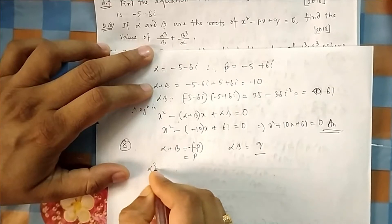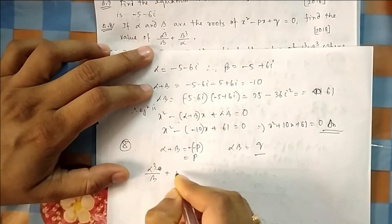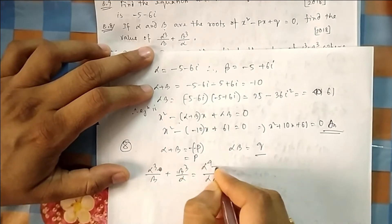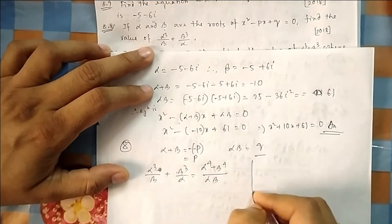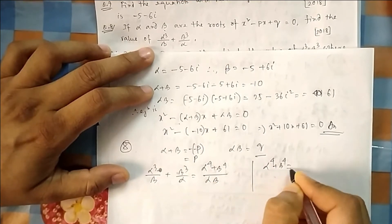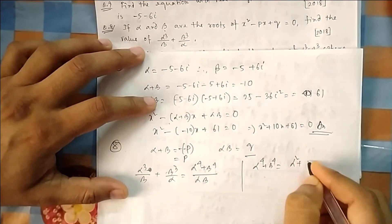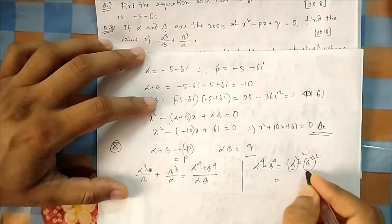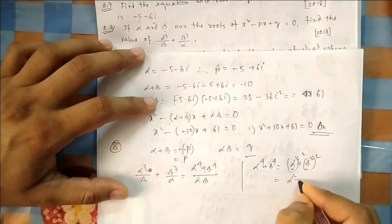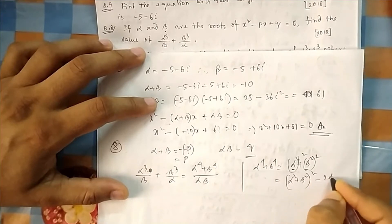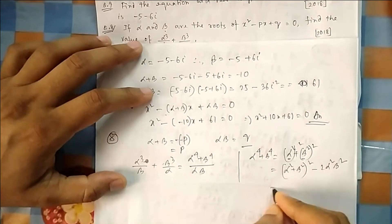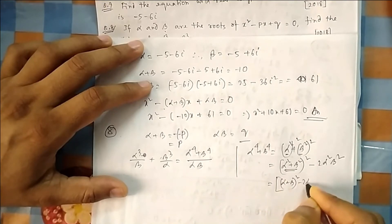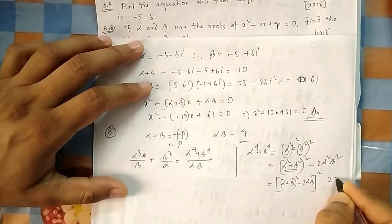So you have to find α³/β + β³/α. So if you take LCM, that is αβ, α⁴ + β⁴. So now let me calculate here α⁴ + β⁴. Then I will put all the values here. What is α⁴ + β⁴? You can write it (α²+β²)² - 2α²β². So if you take this is a, this is b, the a²+b² is (a+b)² - 2ab. So again, this one you can write a²+b² as (a+b)² - 2ab. So ultimately you get this one.